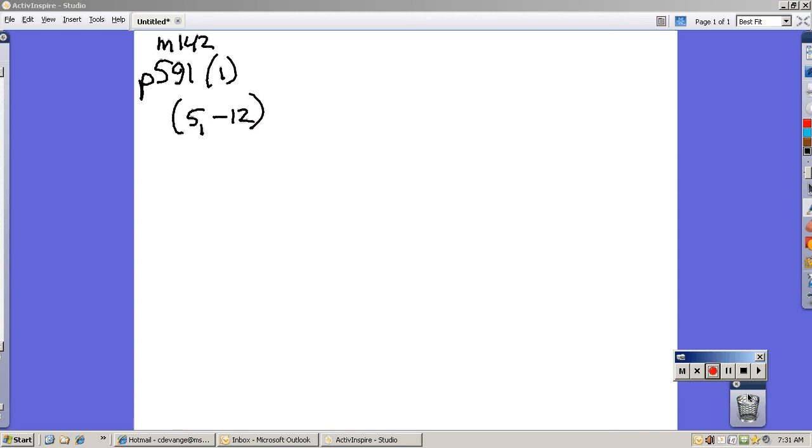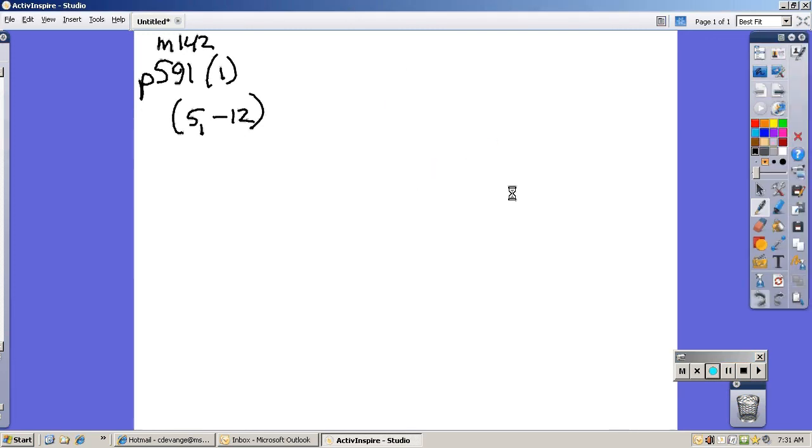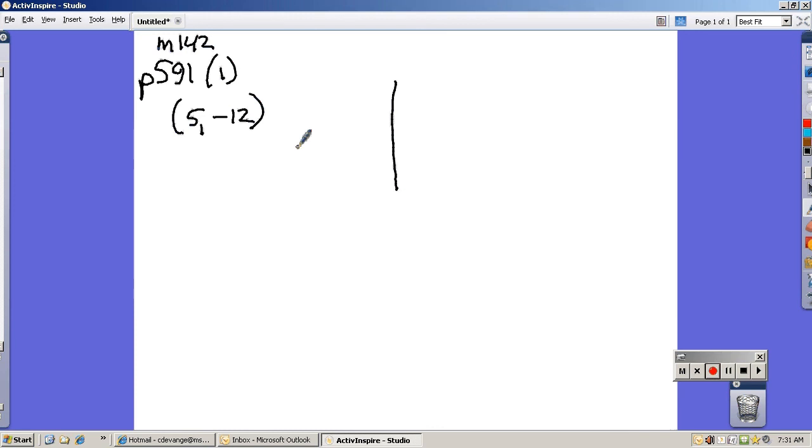We'll call it theta in standard position, and this point (5, -12) is a point on the terminating side of it. So it's going to start here, and let's think about that (5, -12). This is x, this is y, so this means it goes over 5, down 12. So I know that this is the point (5, -12) and my theta would be this angle here.